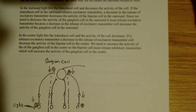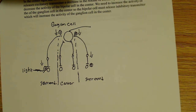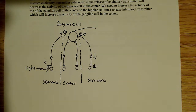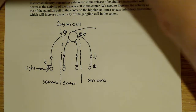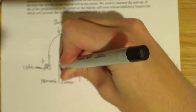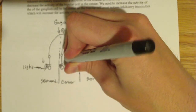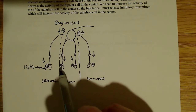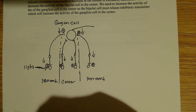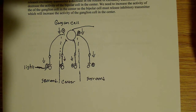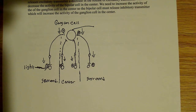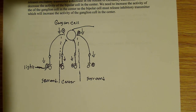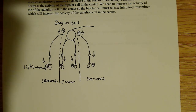In the center, light hits the transducer cell — light hits all of these transducers — and the activity of the cell decreases. So these are excitatory, and we see a decrease in the activity of the bipolar cell. The reason for that is a decrease in the release of excitatory transmitter — excitatory transmitter is being released, but there's a decrease in the activity of the transducer cell, so it results in a decrease in the activity of the bipolar cell. We need to increase the activity of the ganglion cell in the center, so the bipolar cells must release inhibitory transmitter.